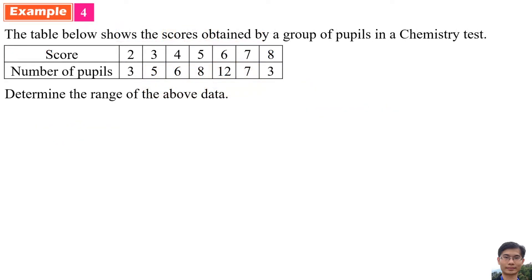Example 4: The table below shows the scores obtained by a group of pupils in a Chemistry test. Determine the range of the above data. The above data is called grouped data. Solution: The smallest value is 2.